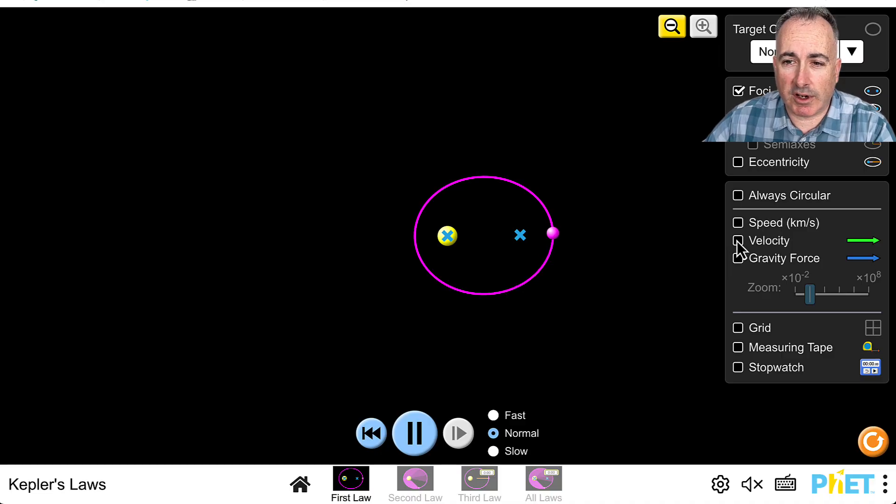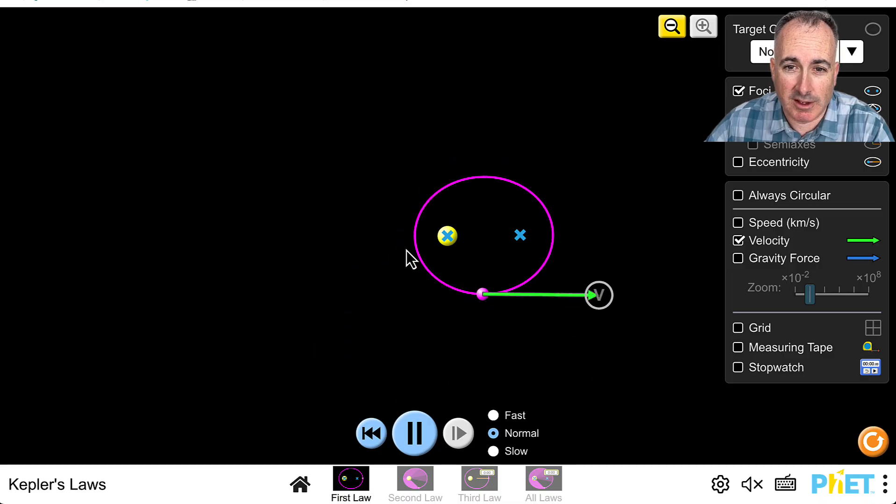Watch carefully as it goes around. This is an ellipse here, these are the focal points here and here. The sun is one of them. If you want to see the axes or eccentricity, those are different things you can use to characterize this ellipse, but we don't need to. We're just going to leave it like this.